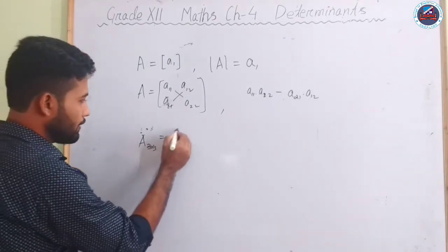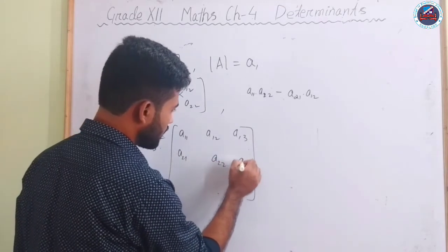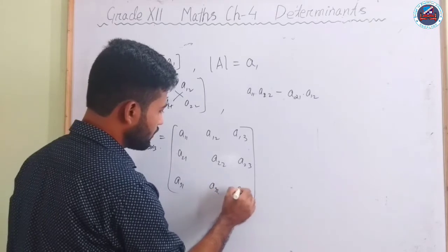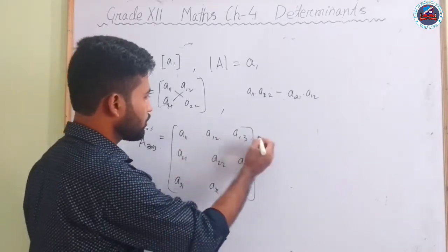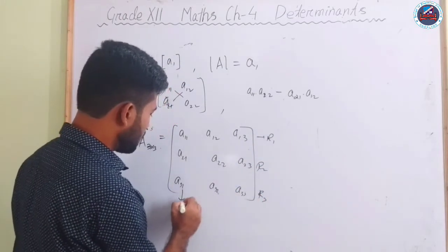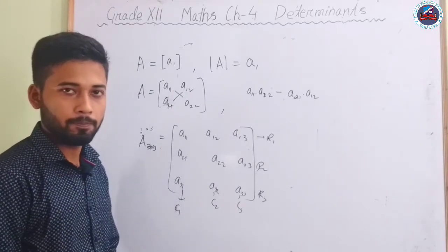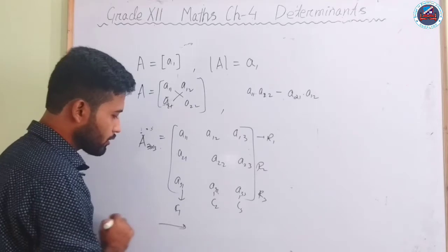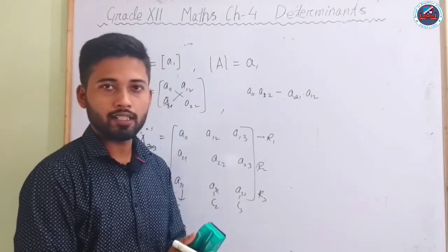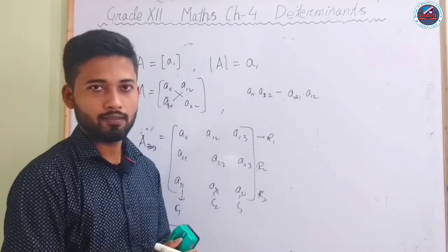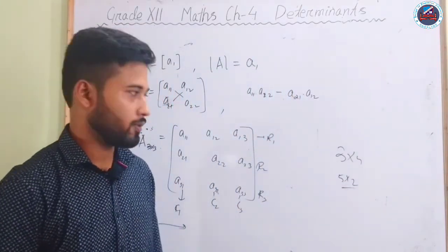What if the matrix is of order 3×3? Suppose A = [a11 a12 a13 / a21 a22 a23 / a31 a32 a33]. In such a case we need to expand the matrix with respect to either row 1, row 2, row 3, or column 1, 2, or 3, using second-order determinants. One important thing to remember: the matrix must always be a square matrix — we cannot find the determinant of a 3×4 or 5×2 matrix.